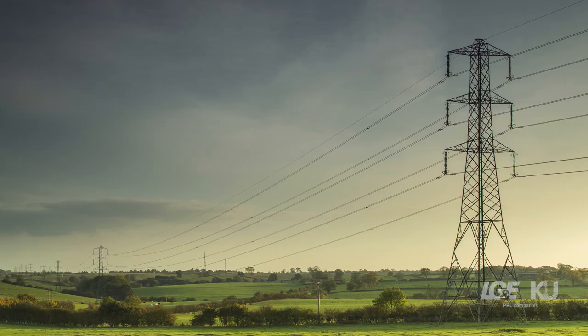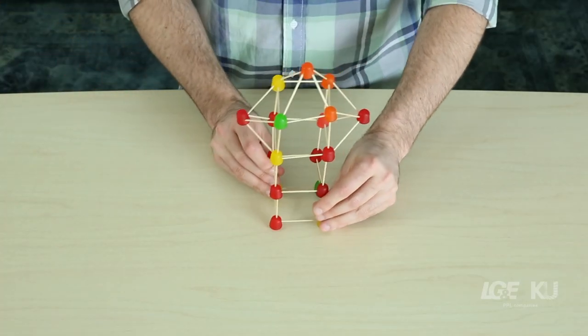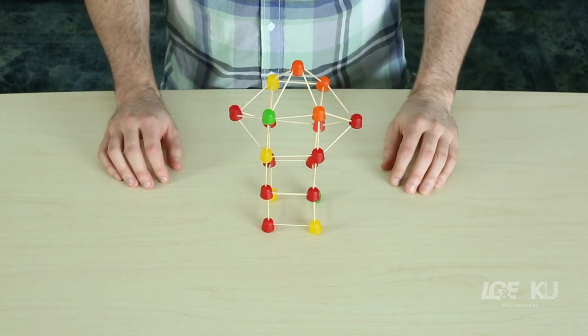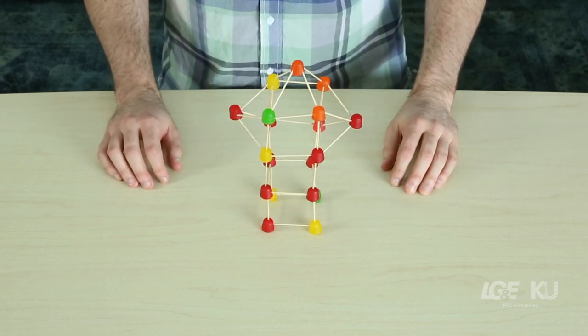High voltage electricity is carried across wires hung on large towers called transmission towers. You can build your own mini transmission tower using gumdrops and toothpicks. It's easy!